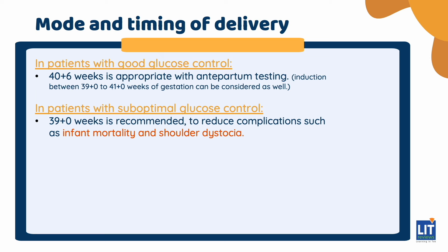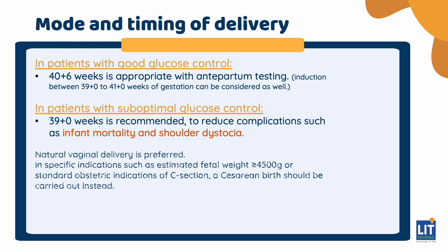Regarding route of delivery, natural vaginal delivery is preferred. However, in specific indications such as estimated fetal weight of more than 4.5 kilograms, or standard obstetric indications for C-section, a caesarean birth should be carried out instead.